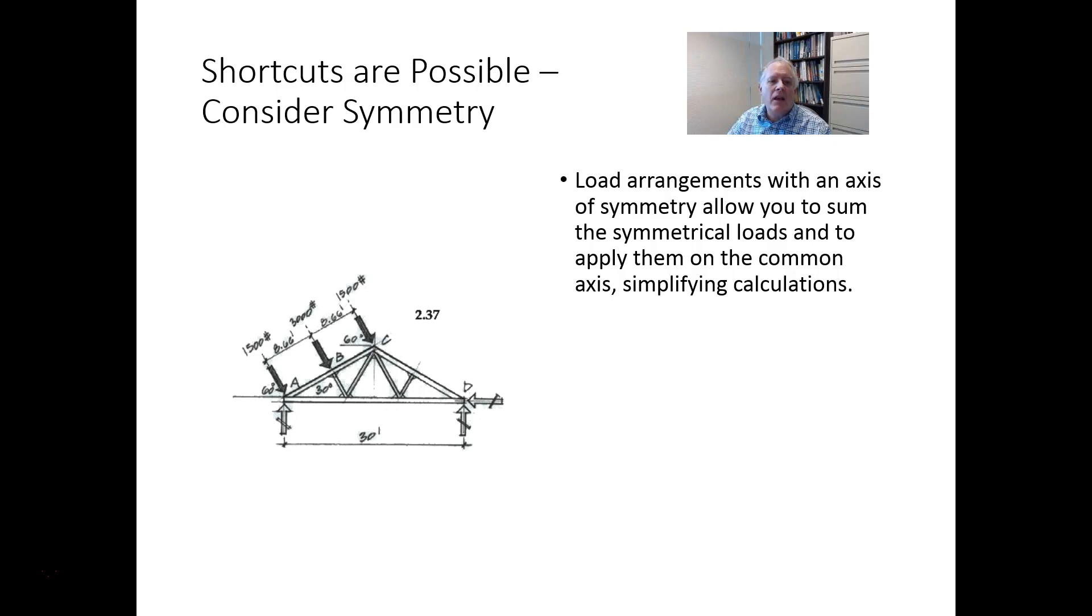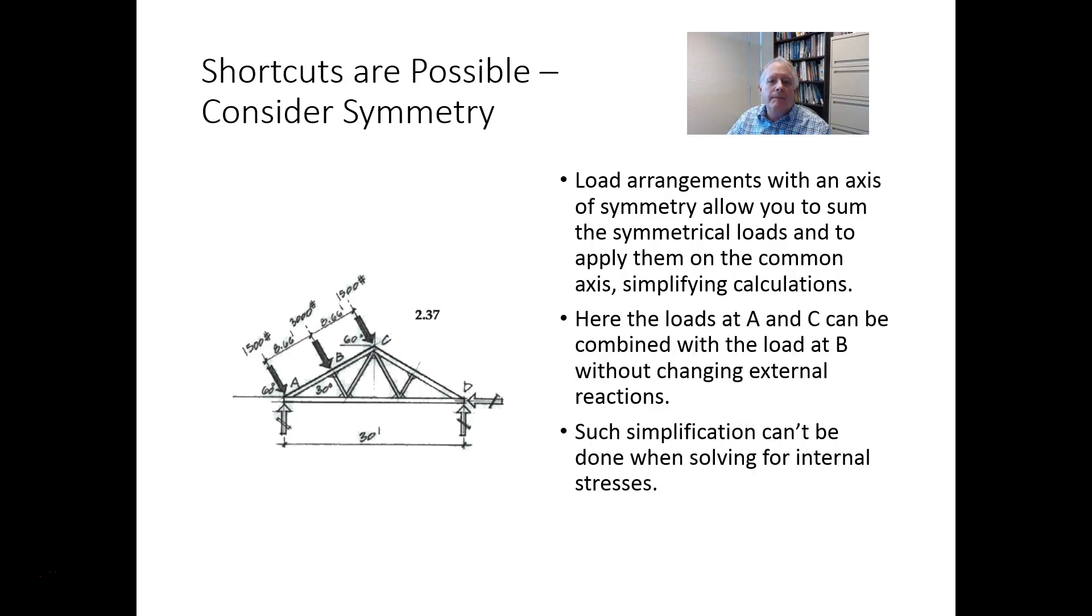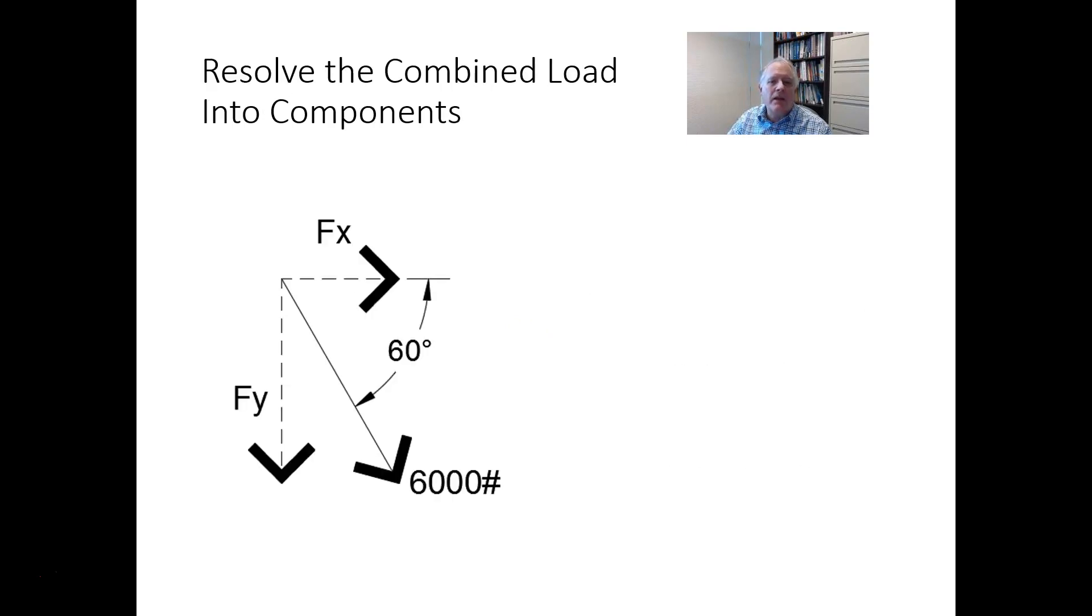In this particular case, we can combine those. So I can take the 1500 on the left, and the 1500 at C, and combine it with the load at B in order to calculate the reactions. Such a simplification can't be done if the distances weren't equal, or if the forces weren't equal. They both have to be symmetrical in order to do this.